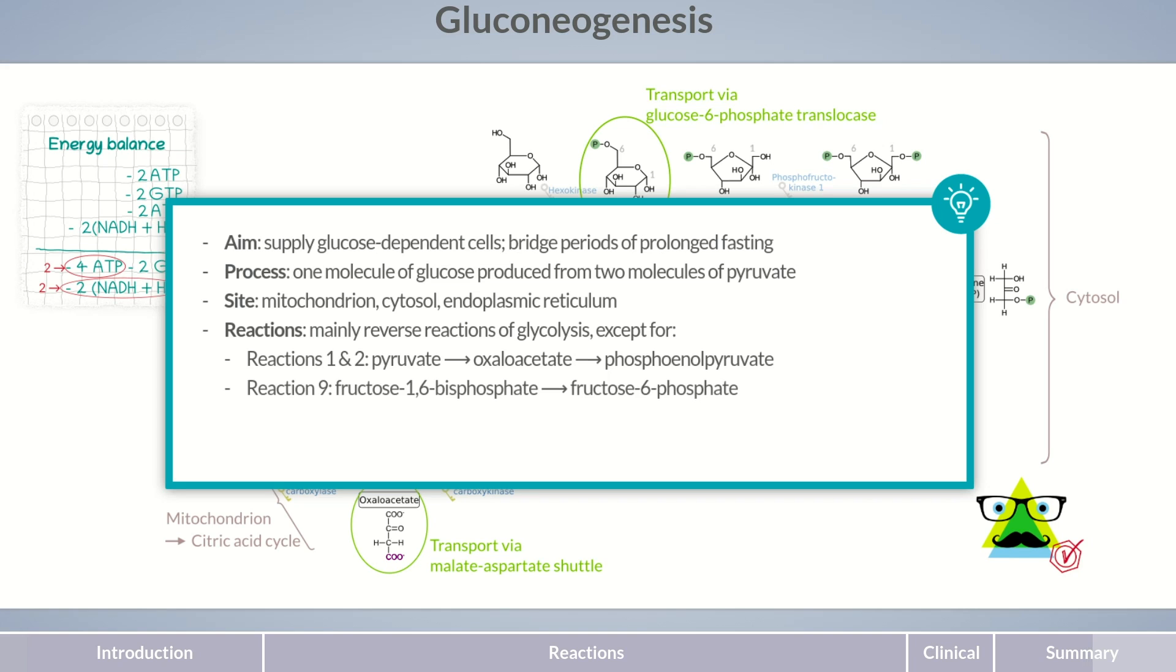The reactions from fructose 1,6-bisphosphate to fructose 6-phosphate and glucose 6-phosphate to glucose are also catalyzed by enzymes specific to gluconeogenesis.